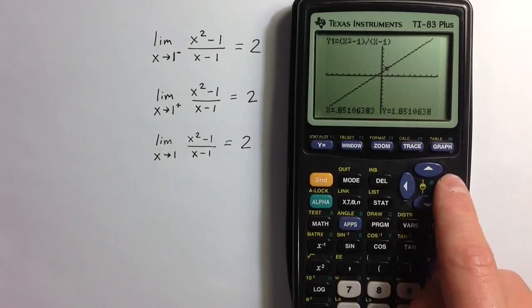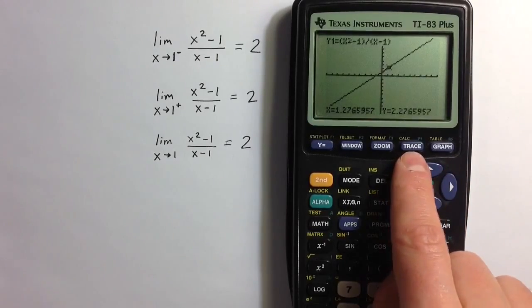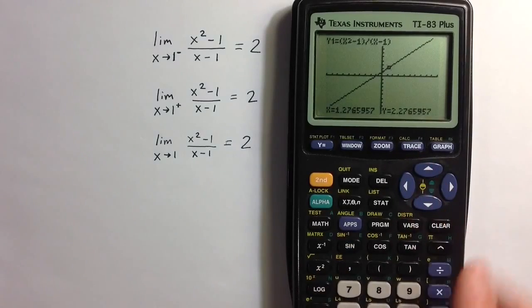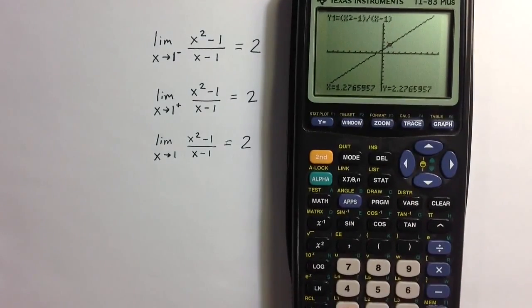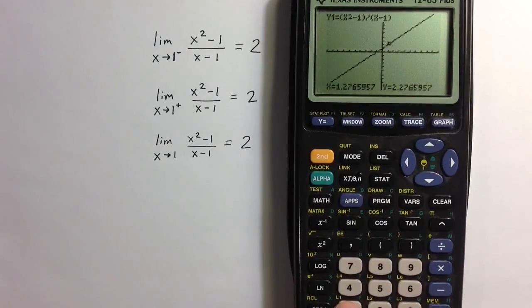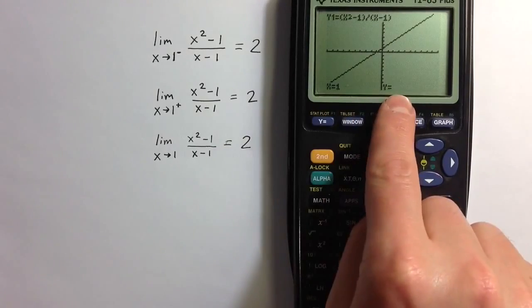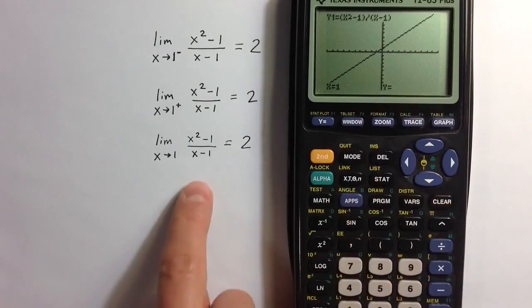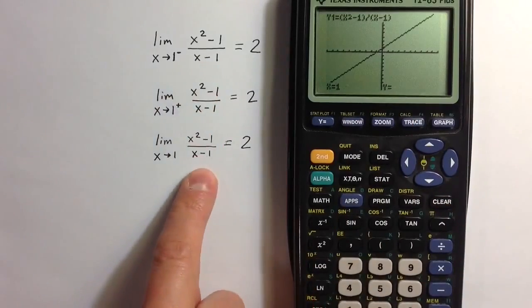The calculator doesn't take us exactly to 1, but in the trace mode here, we can just type in an x value. So if I type in the x value 1 and hit enter, well, I can see that the function is undefined there, as we know it is. It's undefined at 1.